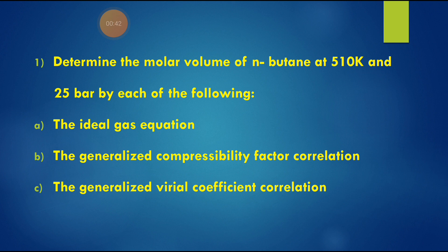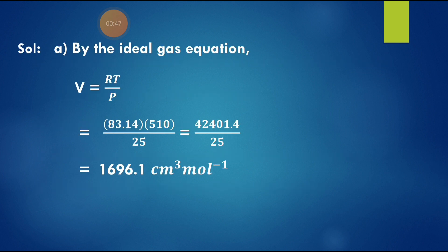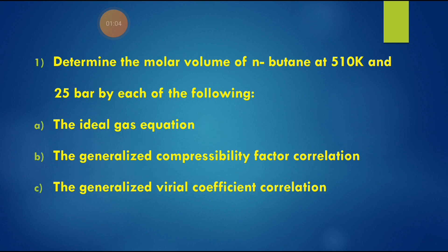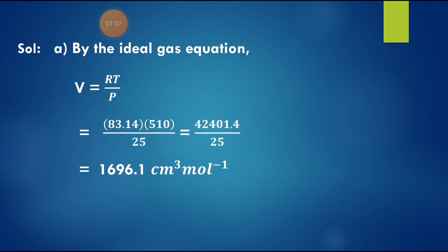First, we find the molar volume using the ideal gas equation: V = RT/P. Substituting the temperature of 510 Kelvin and pressure of 25 bar, we calculate RT/P and get a molar volume of 1696.1 cm³/mol.